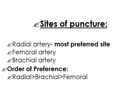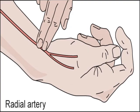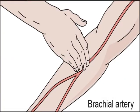So sites of puncture: we have the radial artery — it is the most preferred site — followed by femoral artery and brachial artery. The order of preference for arterial puncture is radial, brachial, then femoral. That's the picture of the radial artery. The brachial is near the basilic vein.